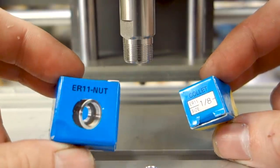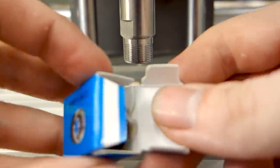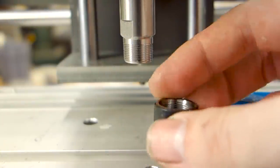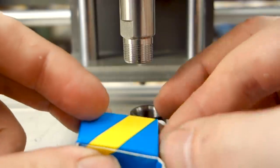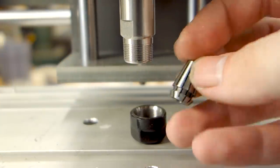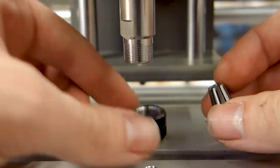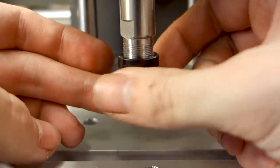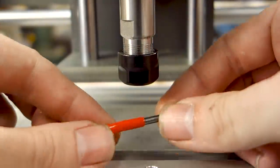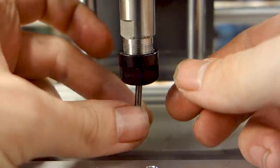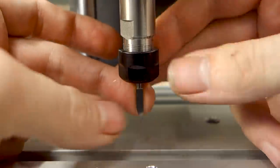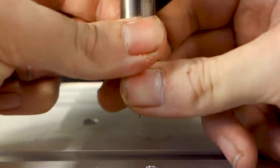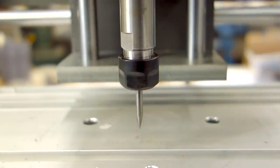This CNC mill uses ER11 collets to hold the tools, which coincidentally is the second smallest ER collet available on the market. While the mill ships with a collet which holds a 1/8 inch tool, it will readily accommodate a 3mm tool as well. Since the machine doesn't have a Z-depth sensor, you're going to have to set the Z0 manually and design your CAM programs accordingly.